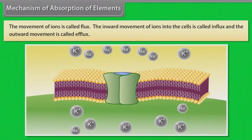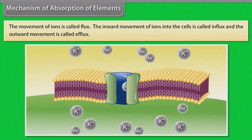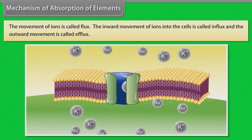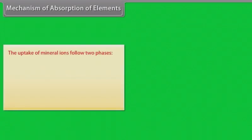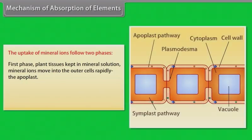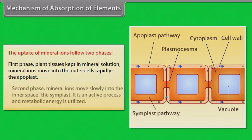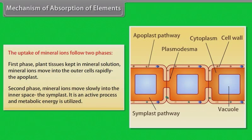Mechanism of absorption of elements: the movement of ions is called flux. The inward movement of ions into the cells is called influx, and the outward movement is called efflux. The uptake of mineral ions follows two phases. First phase: plant tissues kept in mineral solution — mineral ions move into the outer cells rapidly through the apoplast. Second phase: mineral ions move slowly into the inner space.